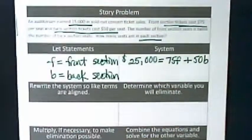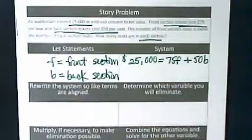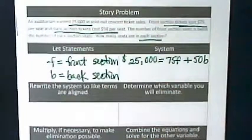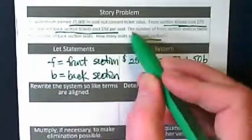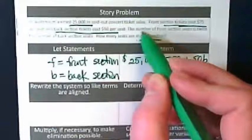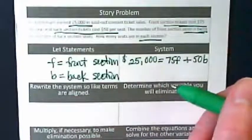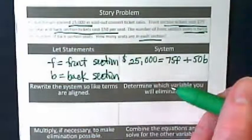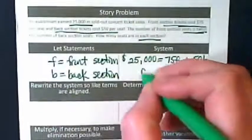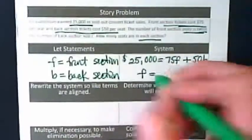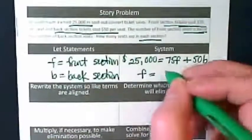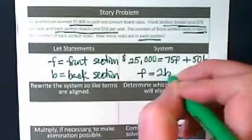The second equation is going to be about numbers. It starts here. The number of front section seats is twice the number of back section seats. That means front section equals 2 times the back.